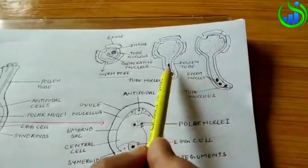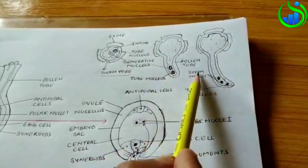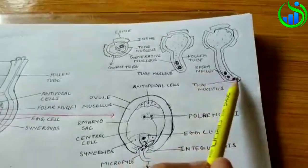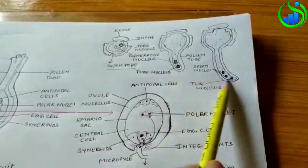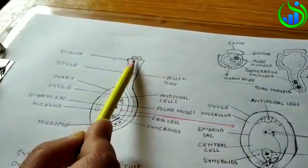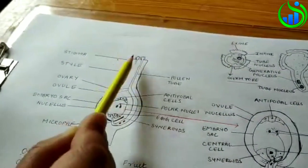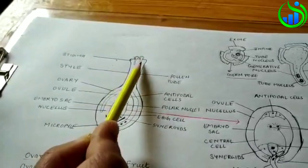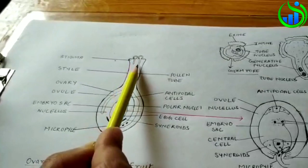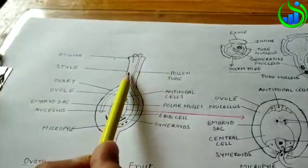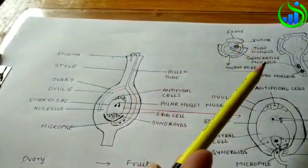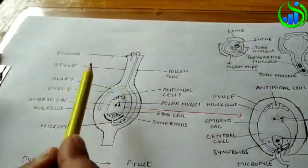The species of the pollen tube will grow. This is the generative cell nucleus or tube nucleus. This is the generative nucleus or sperm nucleus. This is the male gamete or sperm nucleus. This is the tube nucleus. This is the compatible stigma. This is the pollen tube.